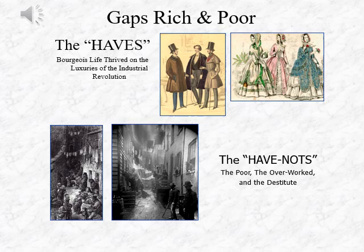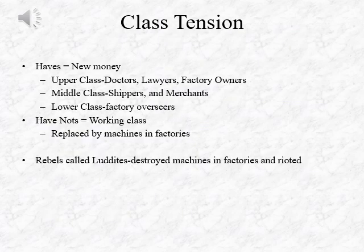During this time, there was a huge gap between the rich and the poor in society. The rich, or the haves, had a bourgeois lifestyle and thrived on the luxuries of the Industrial Revolution, while the poor, or the have-nots, were overworked and destitute, struggling just to find a meal or a clean place to sleep. This gap between the haves and the have-nots led to class tension — between an upper class of doctors, lawyers, and factory owners; a middle class of shippers and merchants; and a lower class of factory overseers versus the working class.